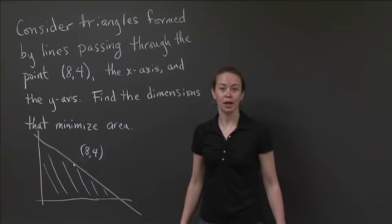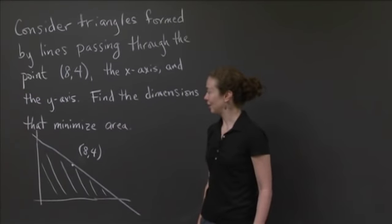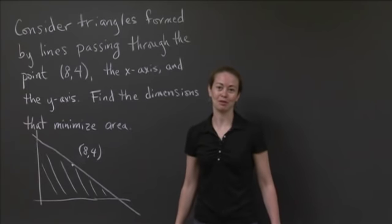So the problem is asking you to find the dimensions of the triangle that minimize the area with the constraint that the line, the hypotenuse, goes through the point (8,4). I'm going to give you a couple minutes to work on it. Why don't you pause the video here? And then when you're ready, restart the video and I'll come back and help you solve the problem.